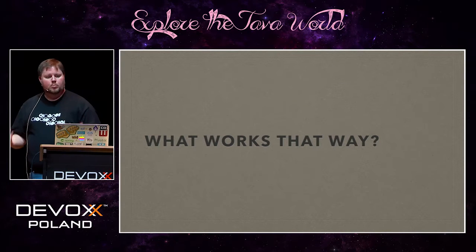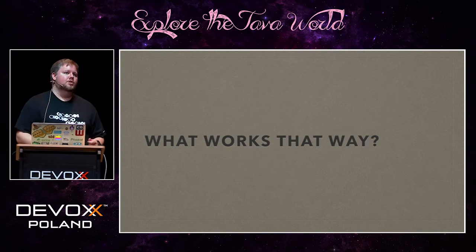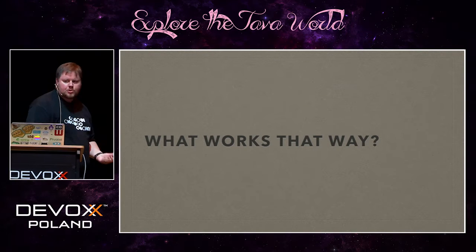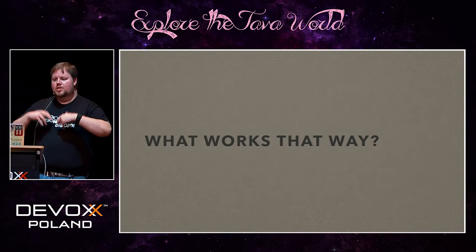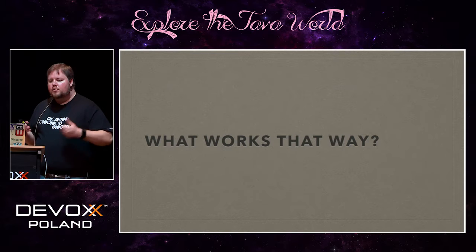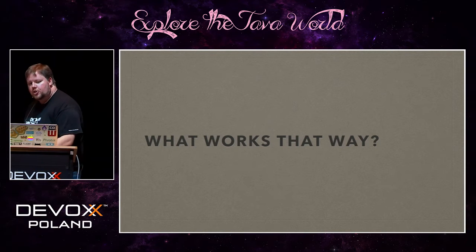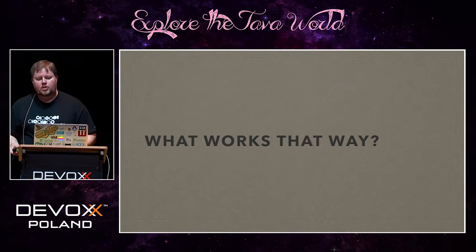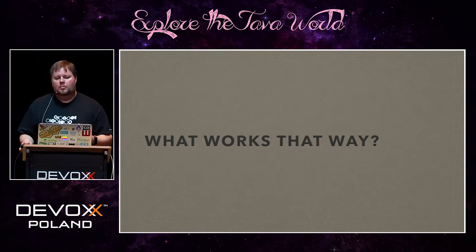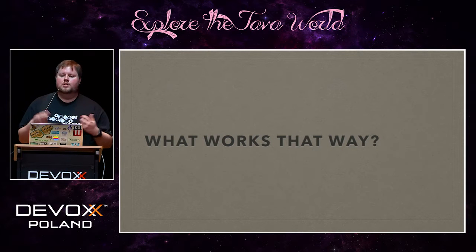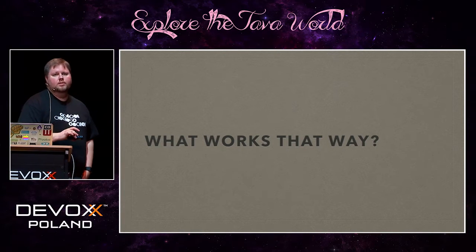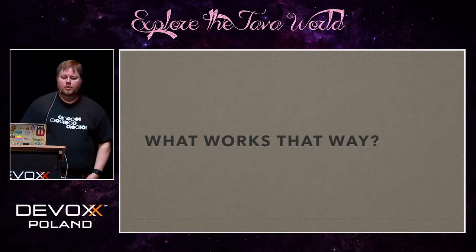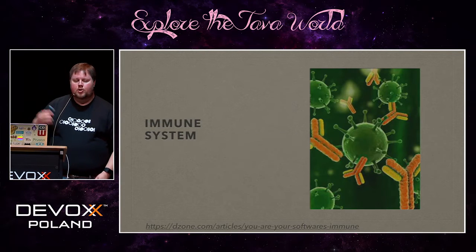Taleb writes in the book about a lot of different areas: political systems, economic systems, the rise of cities and how they evolve, technological innovation, corporate innovation. I want to focus in on three systems that I think will give us the most insight for what we do. First, you have the immune system.